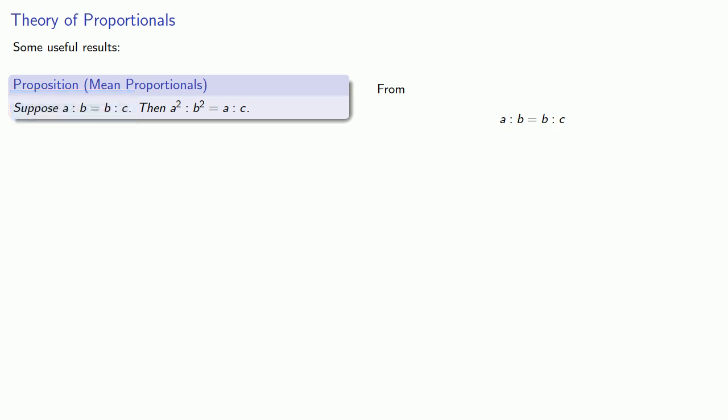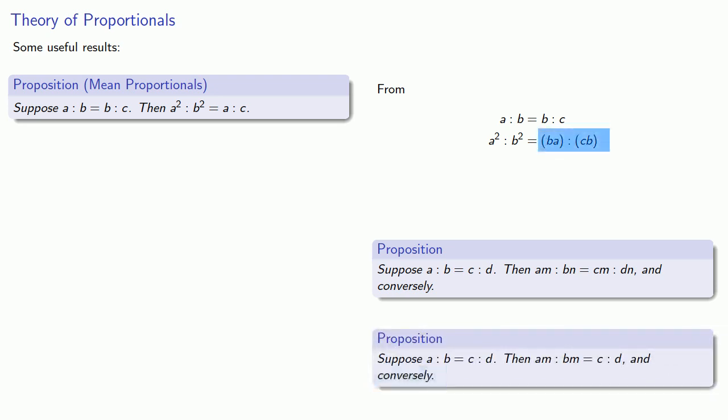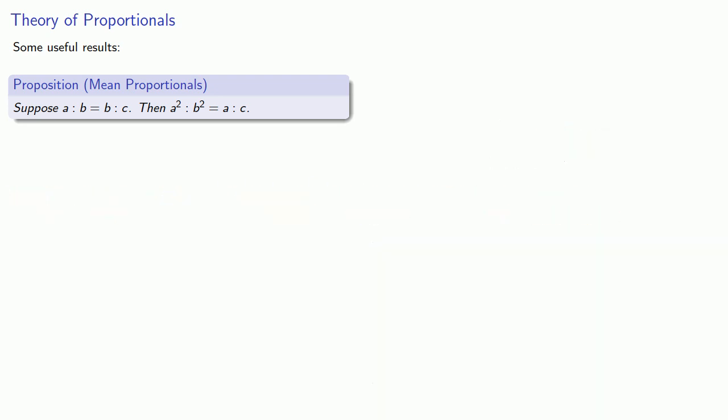One of our propositions says that we can multiply the first and the second terms in a proportionality by different amounts. So we'll multiply the first by a and the second by b. And another one of our propositions says that we can remove a common factor. And so here on the right side we see that both have this factor b, which we can remove.